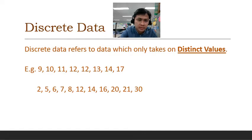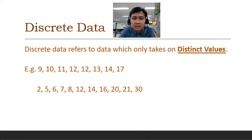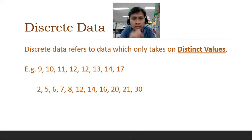Let's take a look at what is the meaning of discrete data. Discrete data basically refers to data which only takes on distinct values — that means only individual, specific values. So suppose we have a set of data with individual values like 9, 10, 11, 12, 13, 14, 17, or another set like 2, 5, 6, 7. All these individual values are known as discrete data.